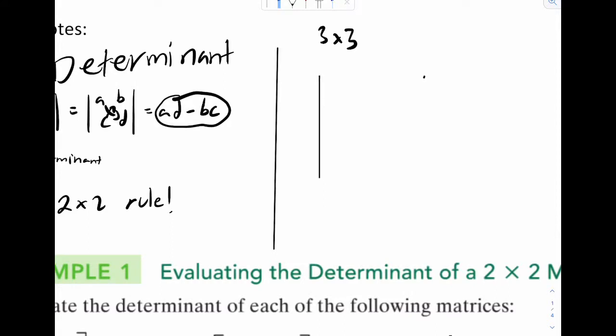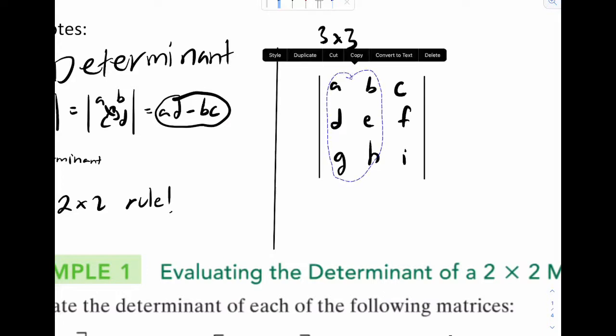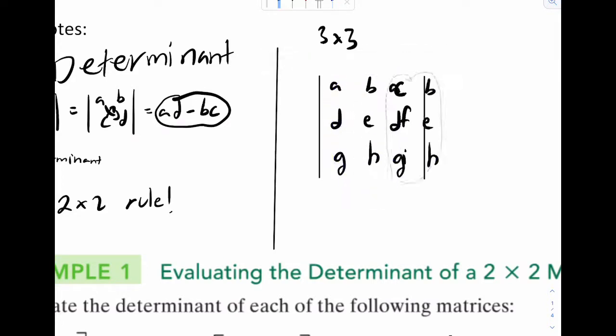I'm going to put my vertical bars like that: a, b, c, d, e, f, g, h, i. This method's pretty cool because all you have to do is grab the first two columns, duplicate them, and put them next to the actual matrix. Now you're going to multiply the diagonals. So it's very similar to the 2 by 2, right? a times d - so that's going to be aei.